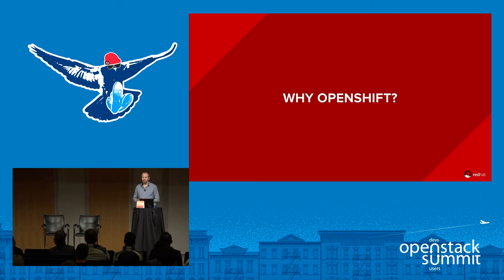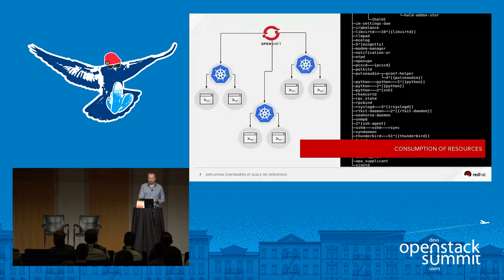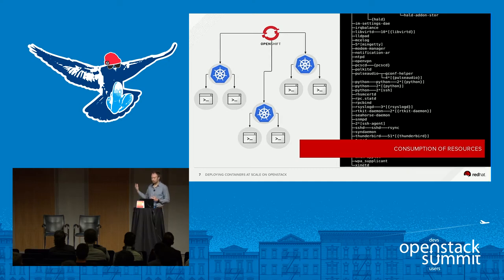Moving up from there, why when we talk about combining containers and OpenStack are we at Red Hat using OpenShift? Why do we want to combine those two? This is really the consumption side of things. OpenShift, and by virtue of inclusion Kubernetes, are consuming resources in a way that's transparent to the application — in that you as the application programmer shouldn't even really have to think about it. It's in terms of the integration of the two systems.